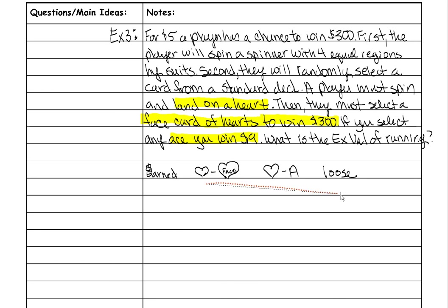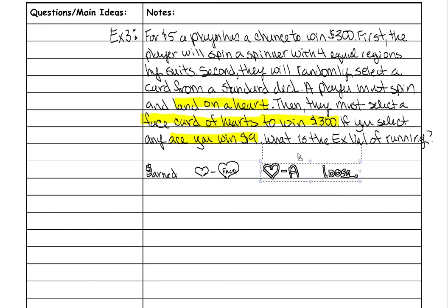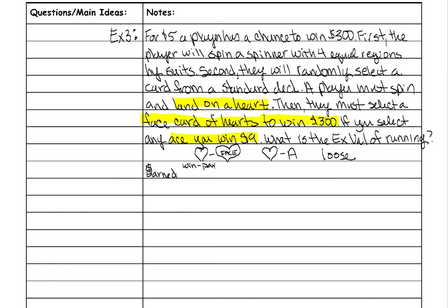How much money do you earn for each situation? If you win $300 but paid $5 to play, you actually get $295. If you win $9 and paid $5 to play, you actually earn $4. If you lose, you win no money but paid $5 to play, so you lose $5.